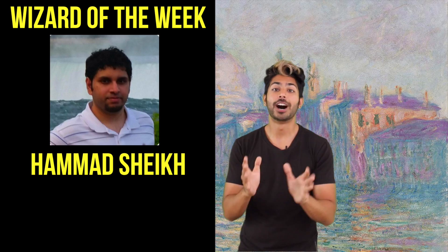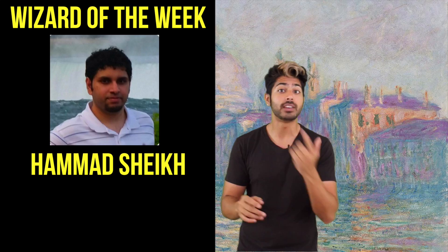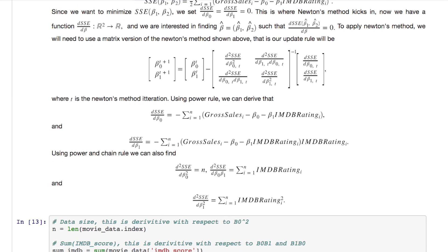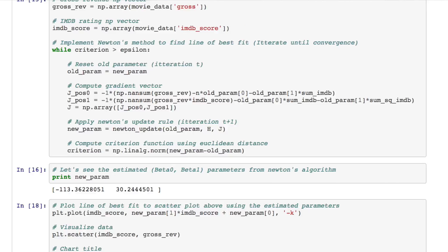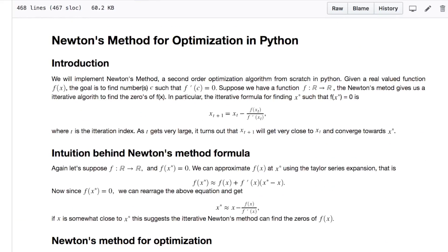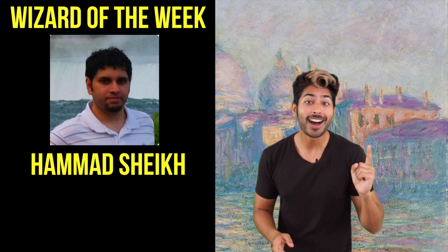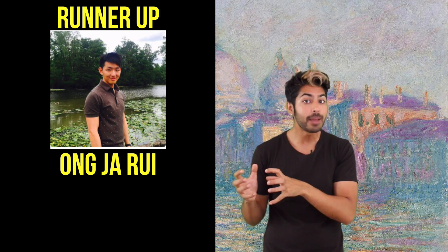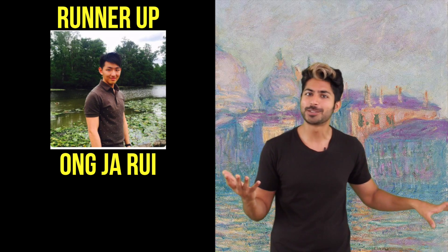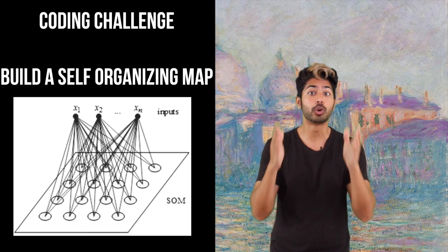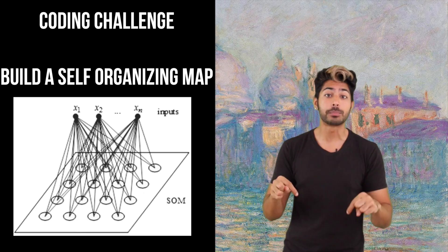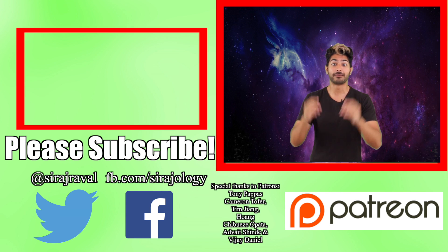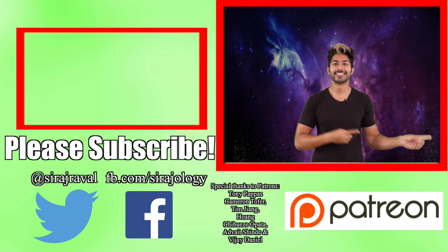The wizard of the week is Hamad Shaikh. I was so impressed by his notebook. It illustrated how using L2 regularization reduces overfitting for high-degree polynomials in the context of linear regression. Specifically, the relationship between movie sales and movie ratings. You make me smile. And the runner-up is Ong Ja-Ri. He used a regularized linear regression to predict the impact of climate change on temperatures in LA. What a dope use case. This week's coding challenge is to build your own self-organizing map. See the description for all the details and post your GitHub link in the comments section. Please subscribe for more programming videos. And for now, I've got to practice my Dutch. So, thanks for watching.